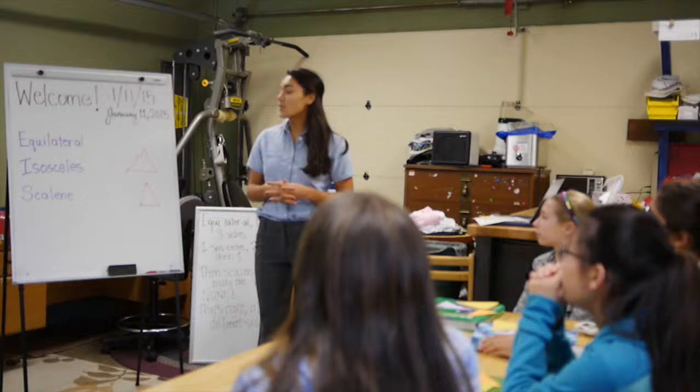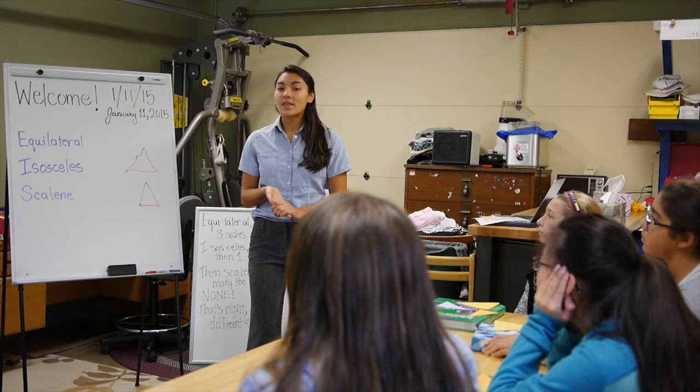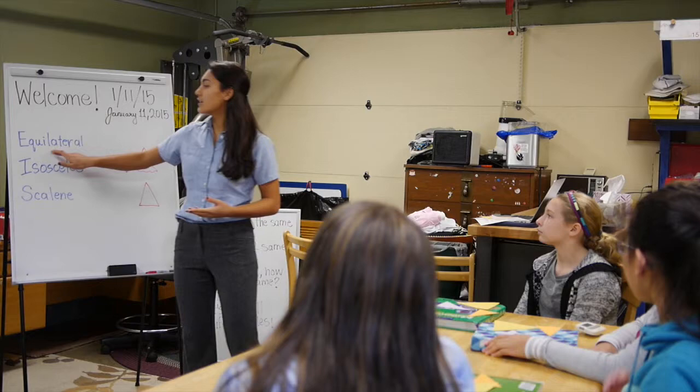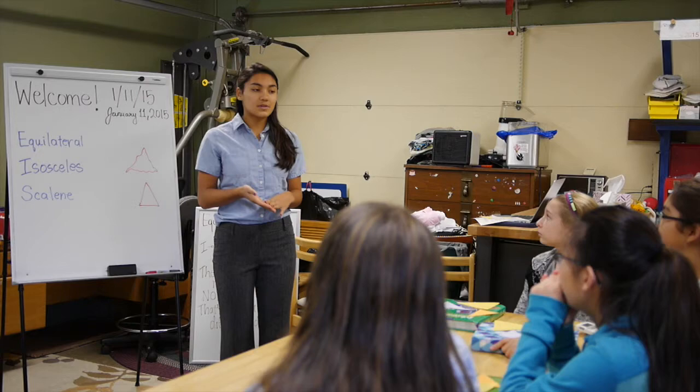So we will begin by talking about the first type of triangle, an equilateral triangle. Can everyone say equilateral? Equilateral. Very good. So an equilateral triangle has three sides that are all the same. Does anyone notice anything about this word in the beginning? Eva? Looks like equal. It does — it looks and sounds like equal.